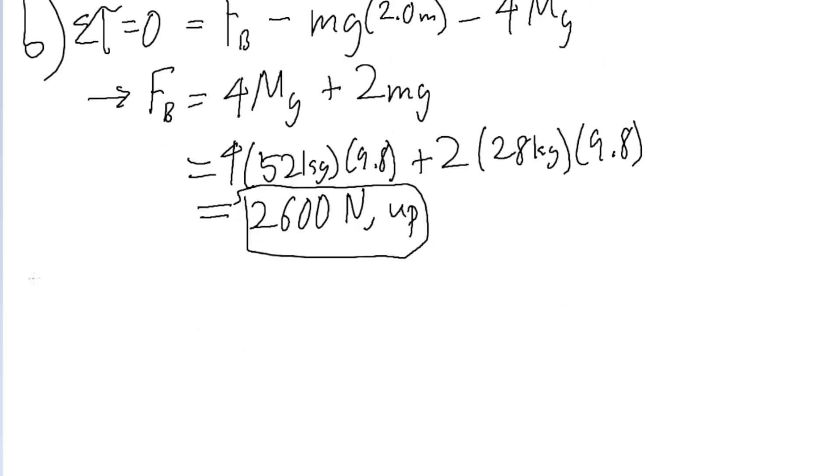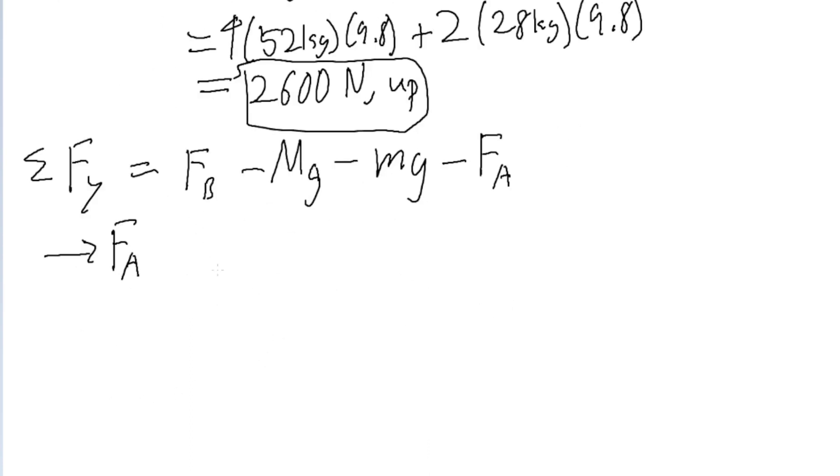And now we only use the same process we used in part a to solve for f sub a. So again, looking at our free body diagram, we can see f sub b is pointing upwards. The weight from the diver is pointing downwards. Minus, now the weight from the board itself is downwards. That's the term we're adding, so it's negative. And then minus f sub a, because that's downwards as usual. So again, we're just going to rewrite this equation, solve it for f sub a.